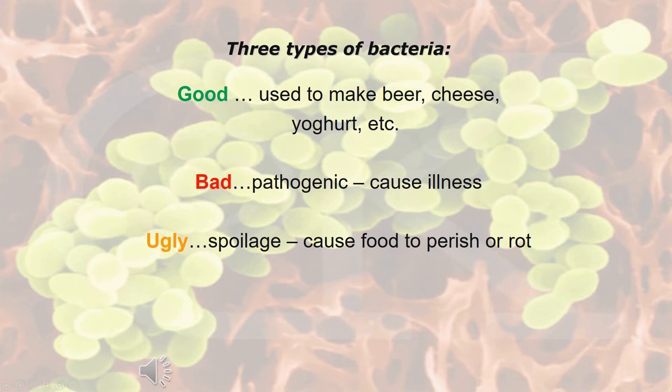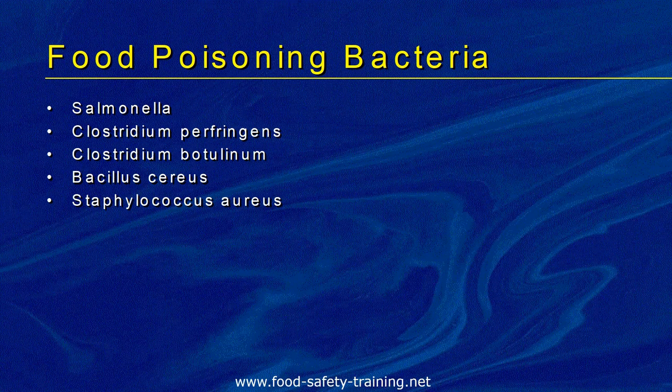The three types of bacteria are: the good — used to make beer, cheese, yogurt, etc., where different types of bacteria are added to foods to increase their taste or longevity; the bad — pathogenic bacteria that cause illness; and the ugly — spoilage bacteria that cause food to perish or rot. Remember those three types: the good, the bad, and the ugly.